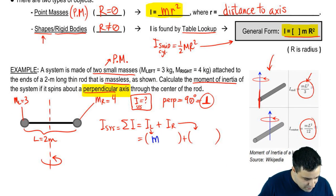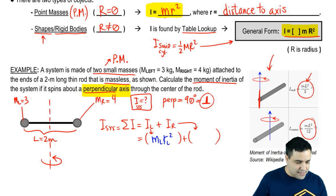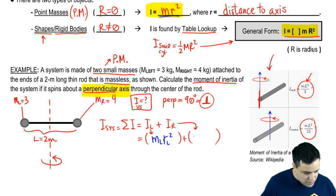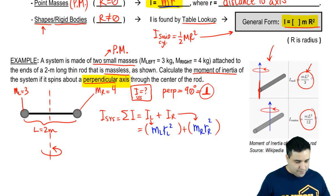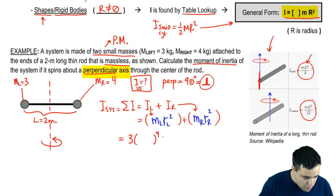So what we're going to write here is M of the left, R left squared, because that's the equation, MR squared. Same thing here, MR squared, but this is for the right. So the masses are three and a four. I like to set it up this way.